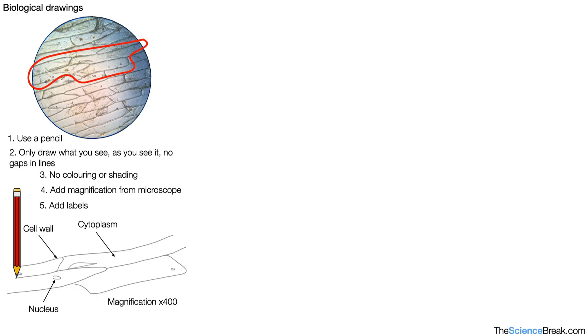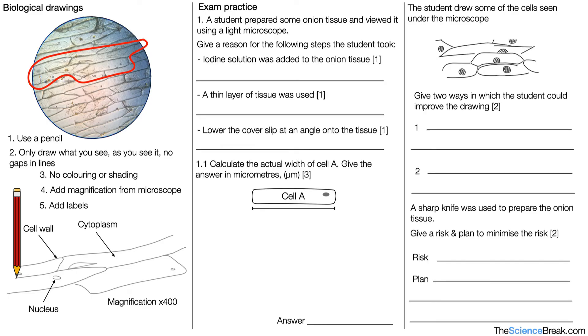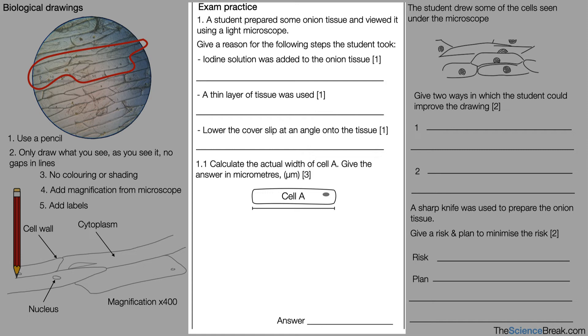So that's pretty much the details of our required practical for microscopy. Let's take a look at some exam style questions. Pause here if you want to give these a go and we can work through them together and mark them and see how well you did. Question one. A student prepared some onion tissue and viewed it using a light microscope. Give a reason for the following steps the student took.